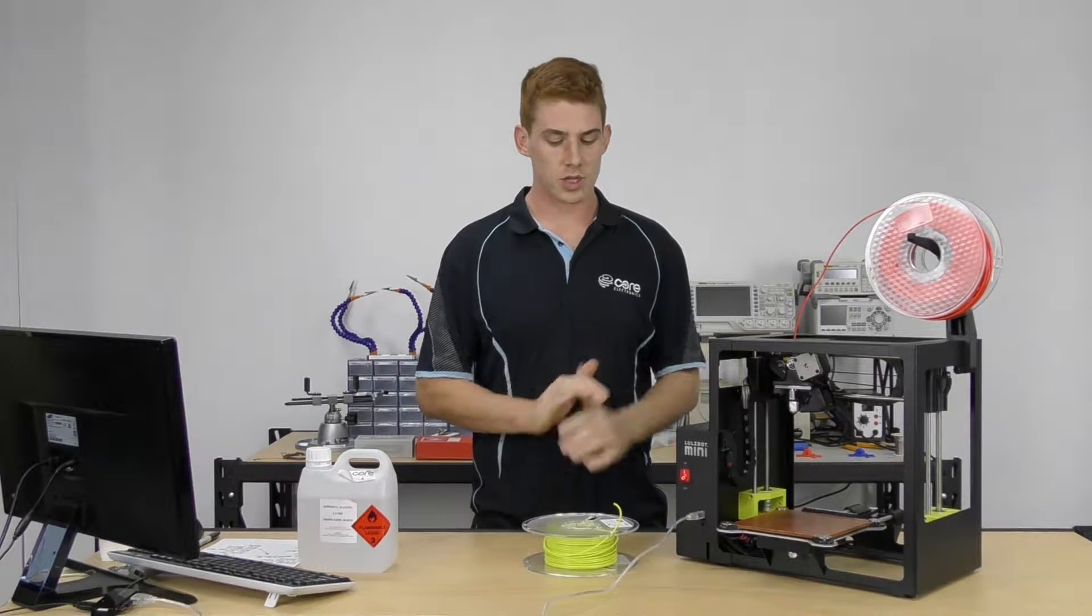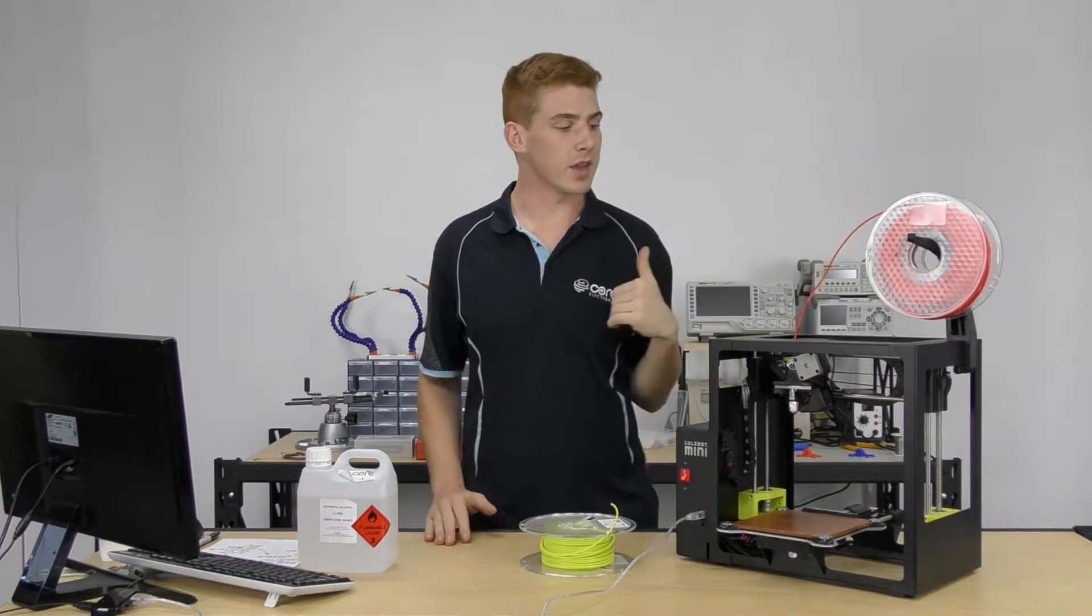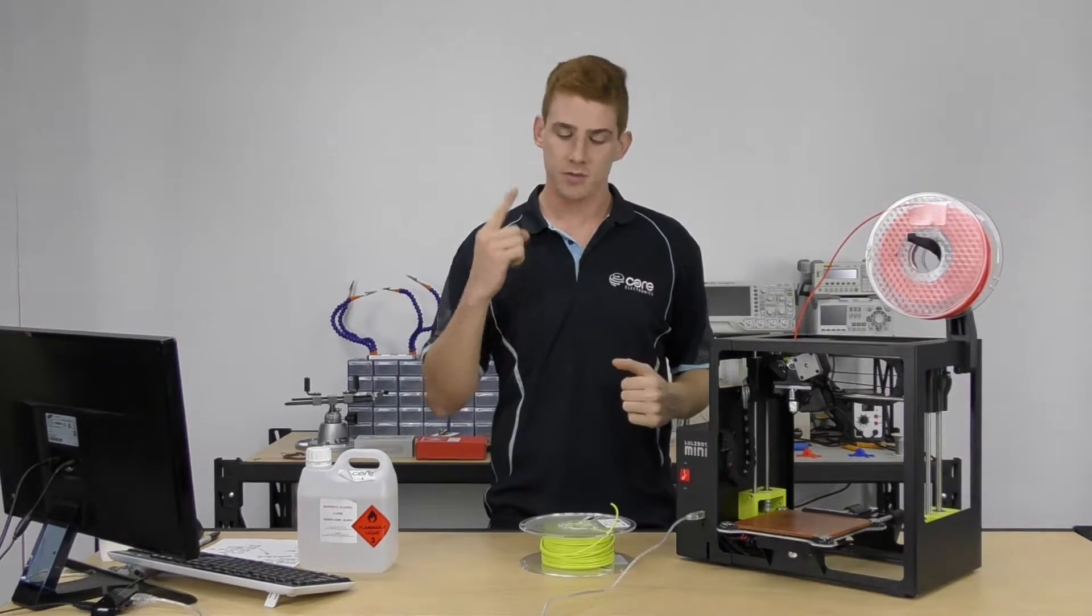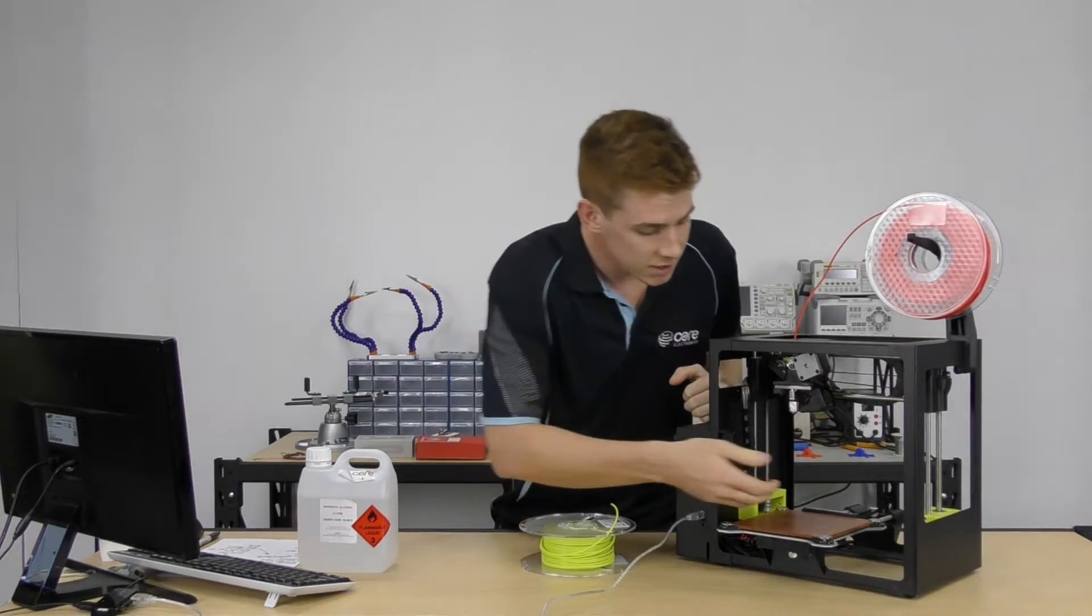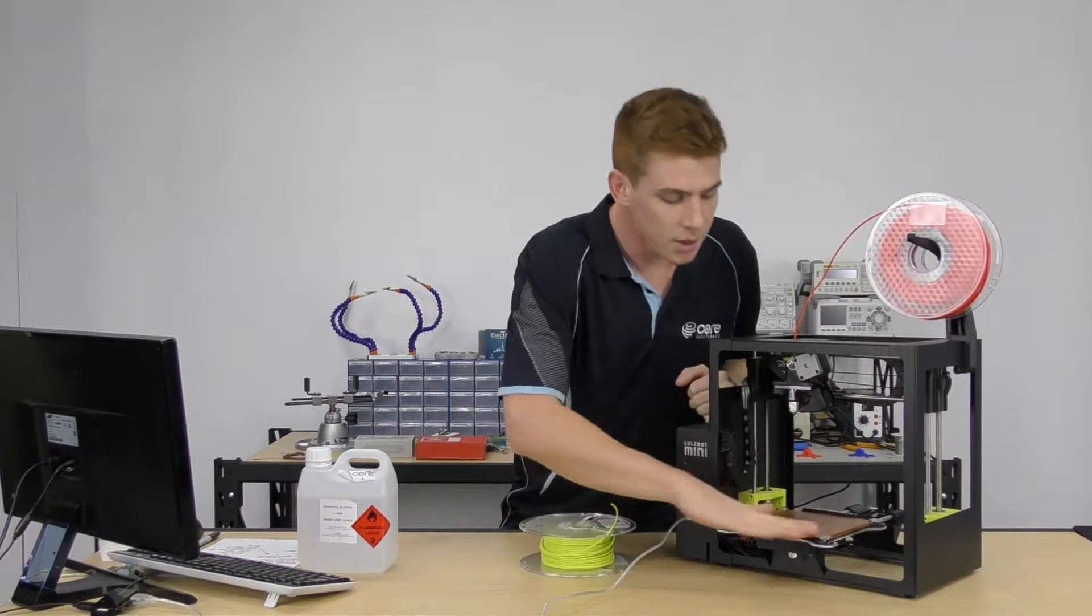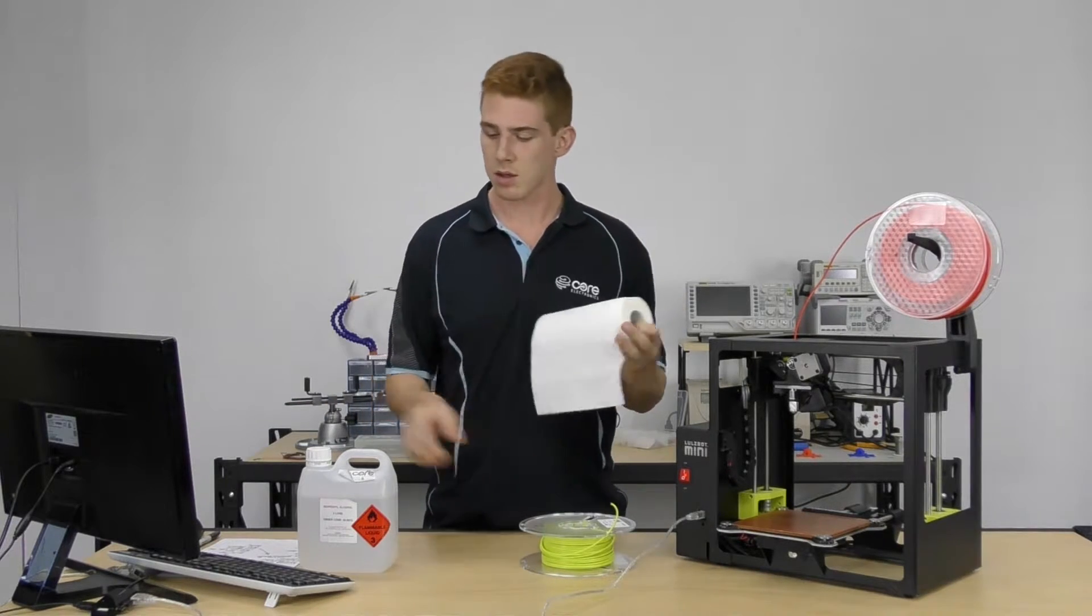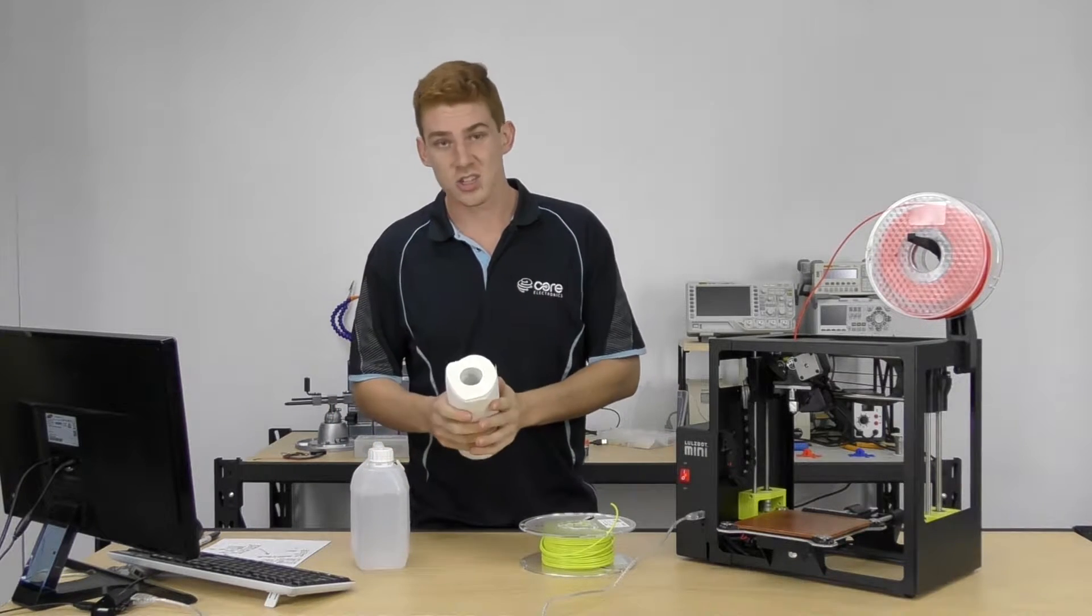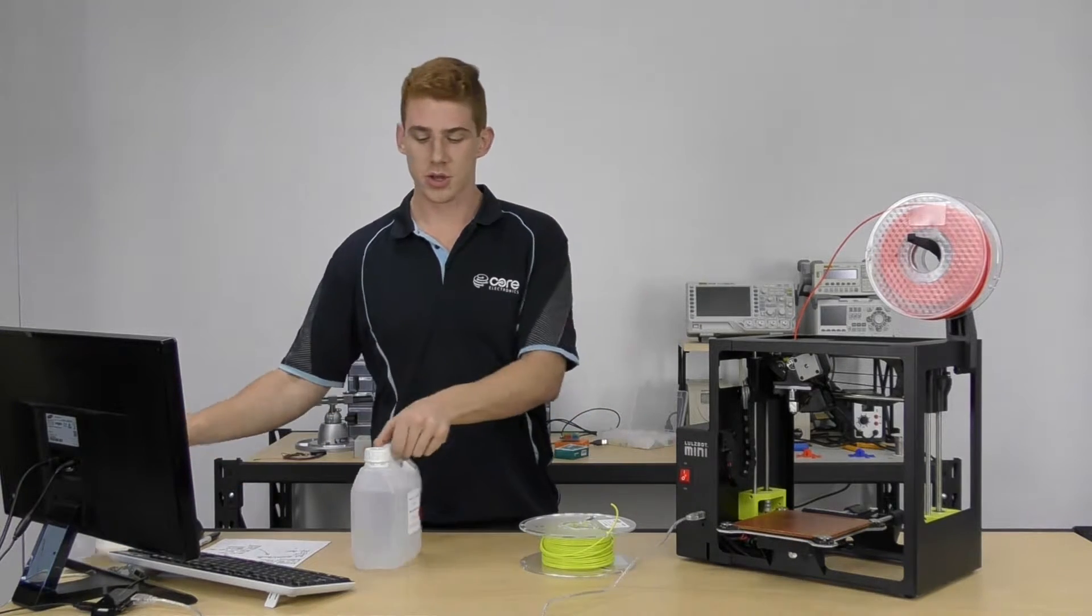So what we're going to do is change our filament out. I've got some filament already loaded into the mini—we've been printing earlier today. First thing I like to do is make sure my print bed is nice and clean. Lucky for us, this is a new PEI sheet with no glue or anything on it. But if we wanted to clean it off, all we need to do is grab some paper towel, some isopropyl alcohol or water, wet it, give it a wipe down, and make sure it's all dry.